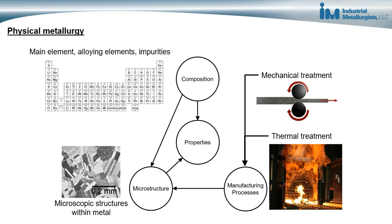Manufacturing processes include mechanical treatments such as cold rolling, extruding, forging, and stamping, as well as heat treatments like annealing, quenching and tempering, and also hot rolling, which is a mechanical and thermal treatment together. These processes modify the microstructure of metals, which then has an effect on the properties of the metals.